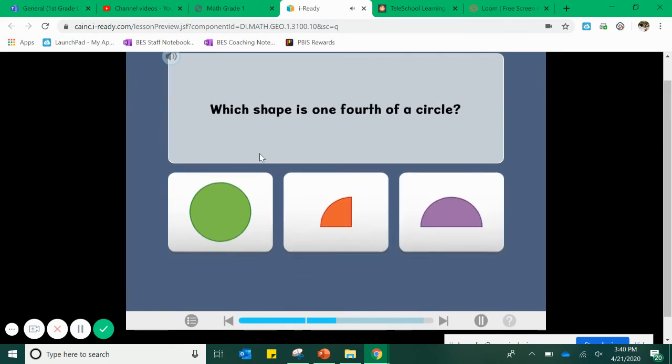Now, which shape is one fourth of a circle? One fourth is going to be one of those four equal parts. It's the same as a quarter of a circle. Well, I have a whole circle over here. That can't be right. That's the whole thing. That's one whole.